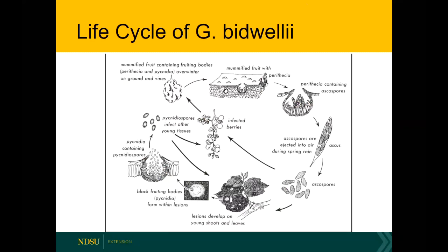Looking at the life cycle of black rot, starting in the upper left you can see mummified fruit containing fruiting bodies. That mummified fruit is very important because it's how the pathogen survives the winter and is the source of infection for the next year. Looking closely at a cross section of that mummified fruit, we can see little cavities called perithecia, and within those cavities are sacs filled with spores. Those spores, released in the spring, are what we call the primary inoculum — the first source of disease.